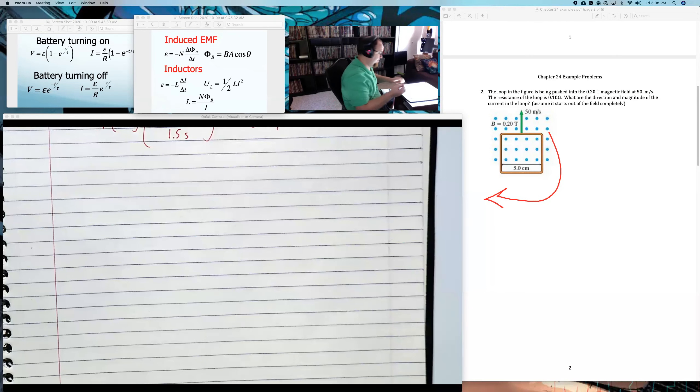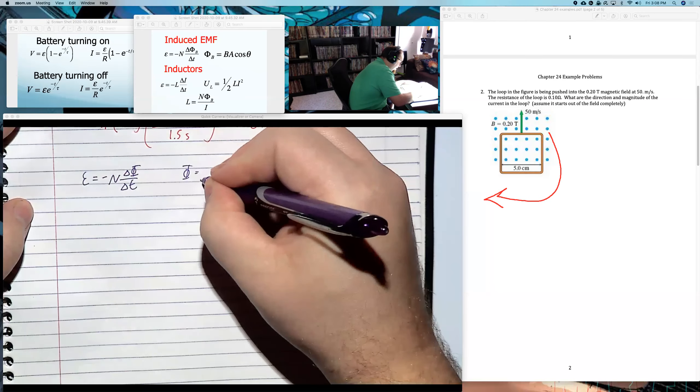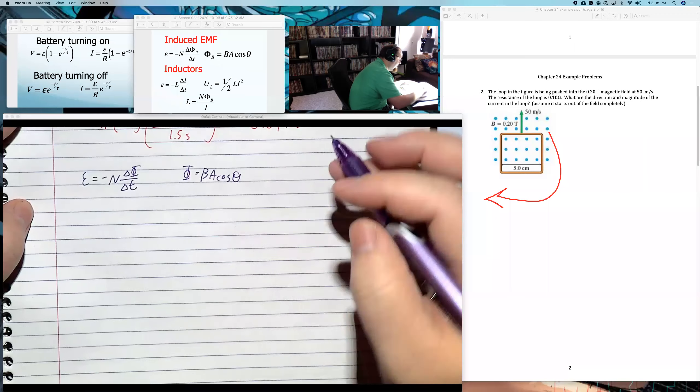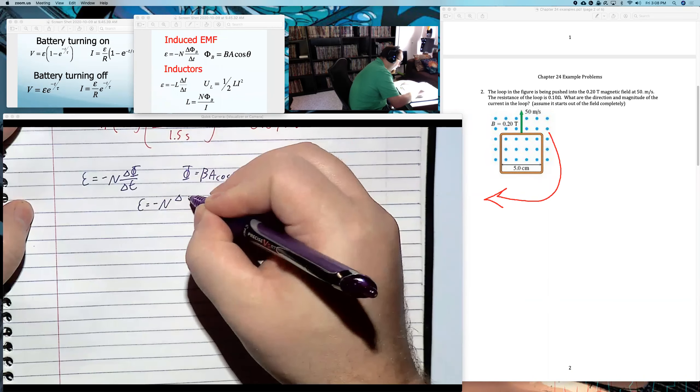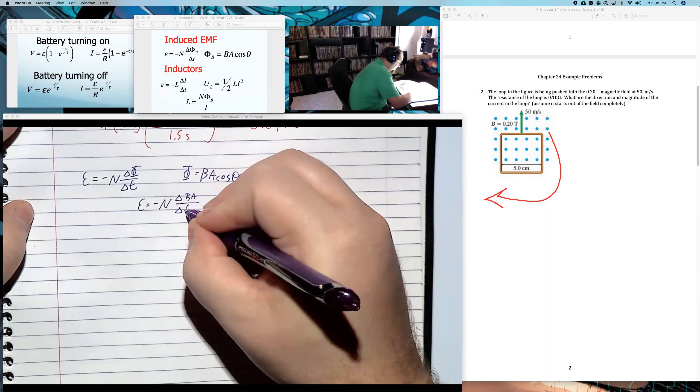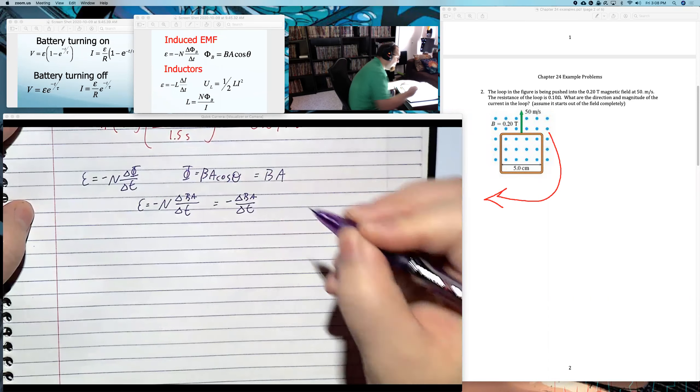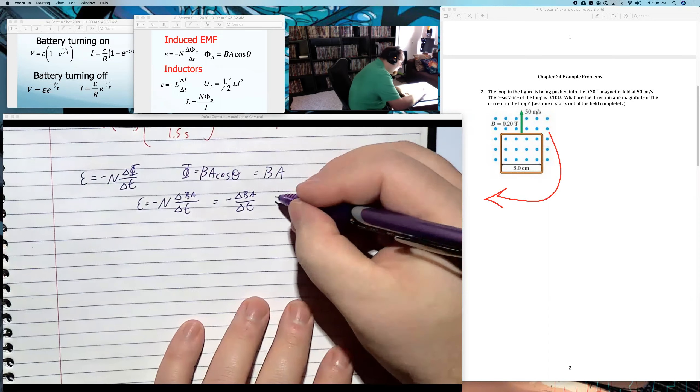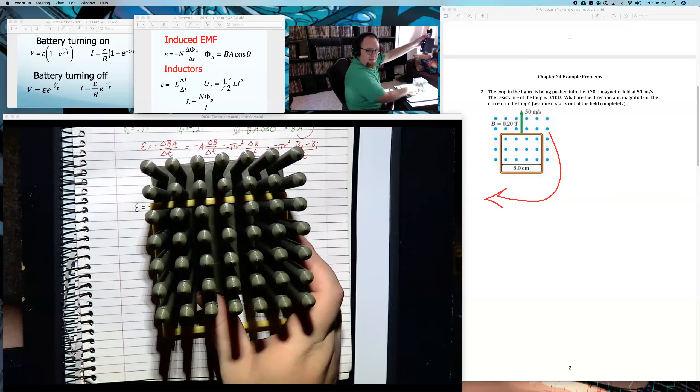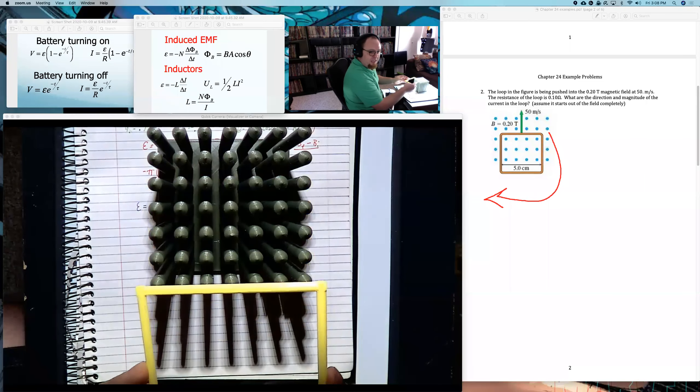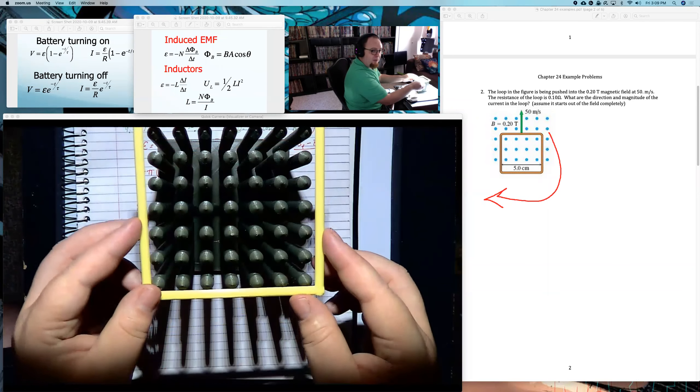But now, we can actually solve for it. So EMF equals negative N change in flux over change in time. Well, flux is BA cosine theta. Now, it's once again at zero degrees. So it's BA again. And so just like last time, I'll say the EMF equals negative N change in BA over change in time. Except N is still 1. But the thing that's changing here is the magnetic field is not changing. The magnetic field is a constant. What's changing is the area of the loop, which doesn't actually make sense. Because if you look at the way I was just doing it, and let's just zoom out for a split second, the loop itself is not changing area. It's the part of the magnetic field in the loop. But that's the thing, is that's all we care about. We don't care about this area down here with no magnetic field in it. We only care about the part with the magnetic field.